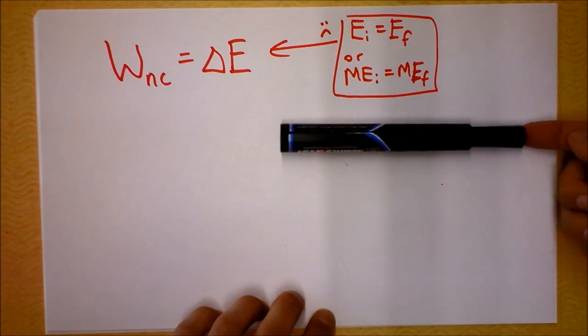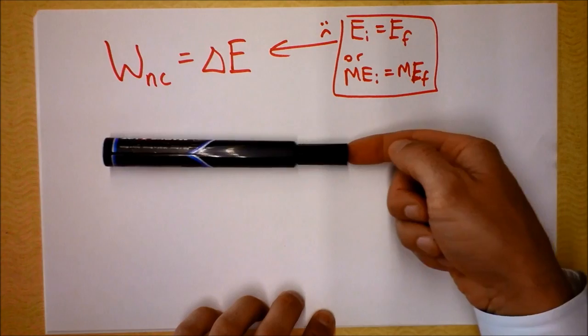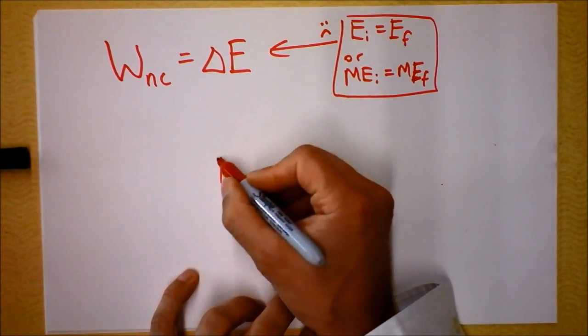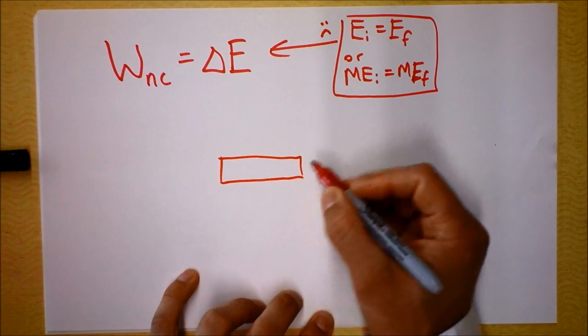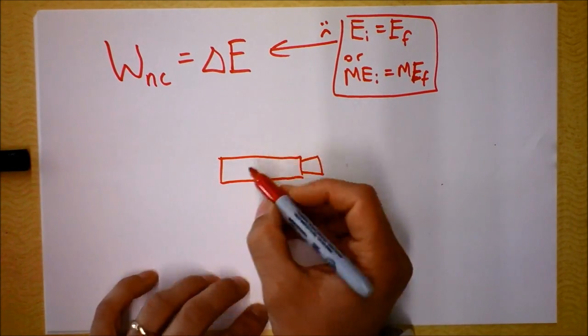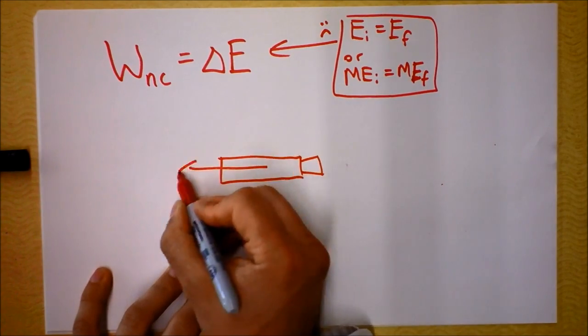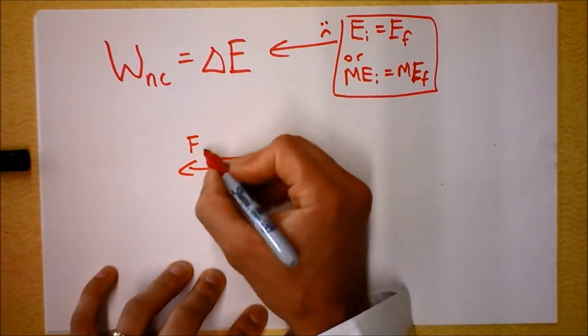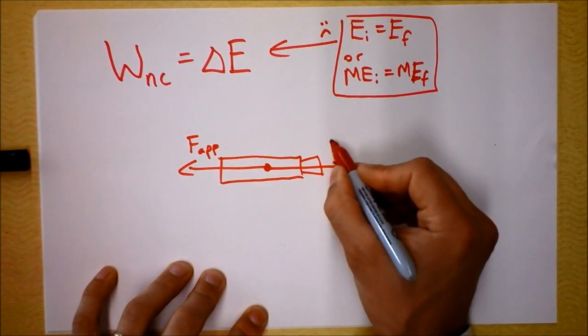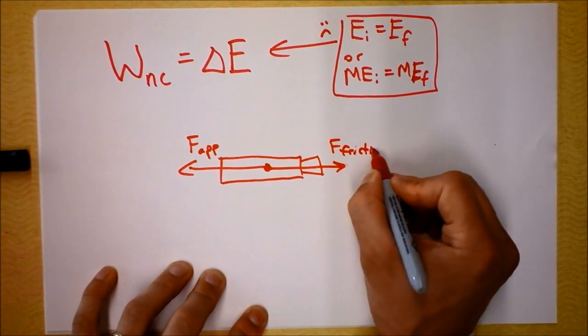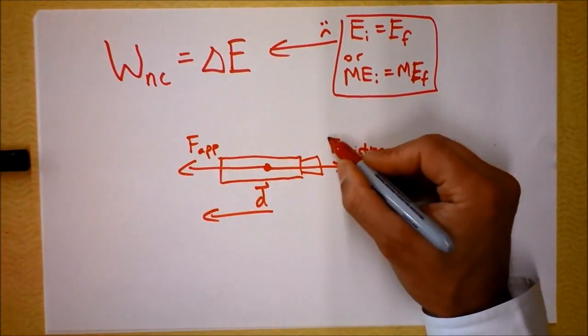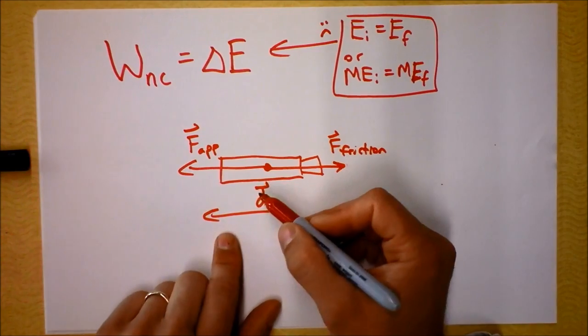What kind of work is friction doing as I push the pen across the paper? So I push the pen across the paper. Sketch the pen for you. The pen's like that, like that. And I'm applying a force that direction. And friction's applying a force the other way. And the pen is going that direction. So friction is doing negative work in that case.